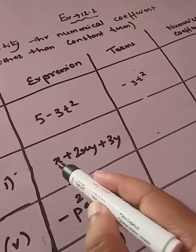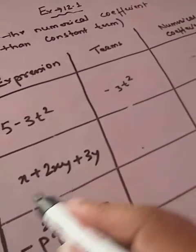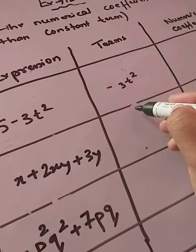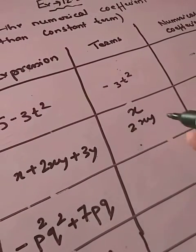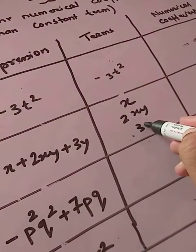Let's see question number 3. How many terms are there? 1, 2 and 3. So we will write, there is no constant term. So, number 1 term is this. Number 2 term is this. And 3rd term is this.